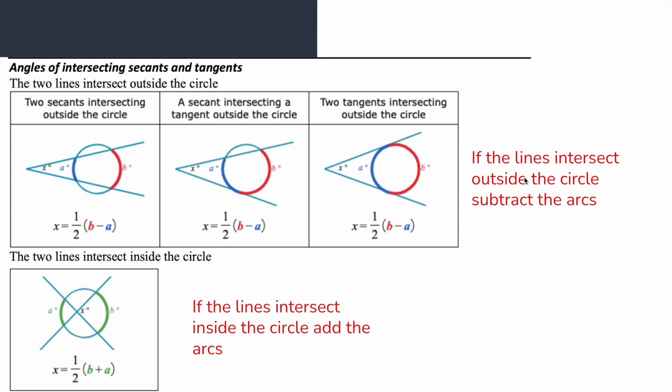If lines intersect outside the circle we're going to subtract the arcs. If the lines intersect inside the circle, so we have two secants coming together with an X in the middle, we still have two arcs being created but now we're going to add the arcs together and divide by two. That'll give us the angle that's in line with the arcs.